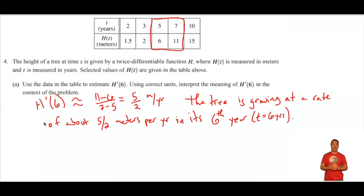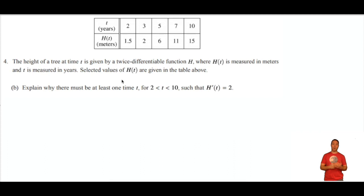Let's take a look at Part B. Part B wants us to explain why there must be at least one time t between 2 and 10, such that h prime of t equals 2. And this here is going to be the mean value theorem.